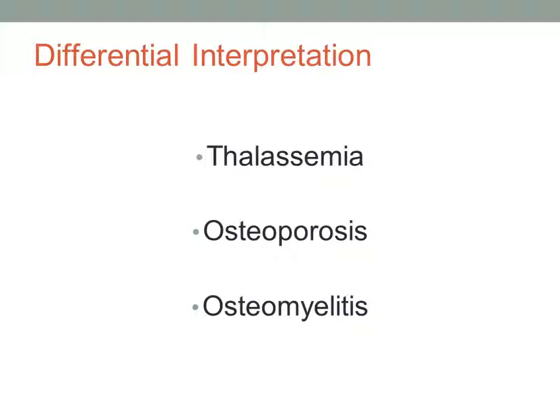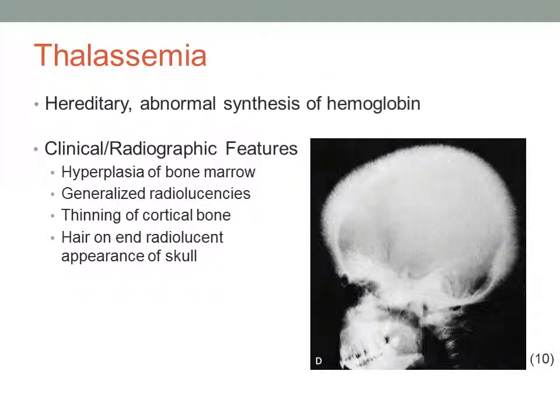Differential diagnoses of sickle cell anemia include thalassemia, osteoporosis, and osteomyelitis. Thalassemia is a hereditary disease which causes abnormal synthesis of hemoglobin. Similar radiographic features include hyperplasia of the bone marrow, generalized radiolucencies, thinning of the cortical bone, and a hair-on-end radiolucent appearance of the skull. The localized radiopaque areas seen in sickle cell anemia are absent in thalassemia, which can be used to differentiate the two diseases.